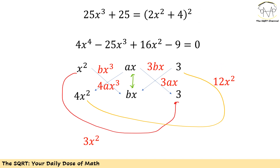Expanding the right hand side and moving everything to the left hand side and simplifying, we arrive at the degree-4 equation: 4x⁴ minus 25x³ plus 16x² minus 9 equals 0.